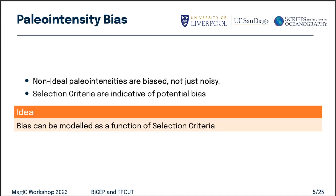The idea I came to was that non-ideal paleointensities that we're selecting out are being selected out because they're biased — some systematic deviation that isn't just random noise from the true value. Selection criteria are indicative of this, and so perhaps you could model bias as a function of selection criteria. That's the fundamental idea I started with.